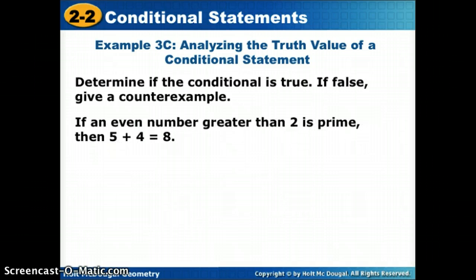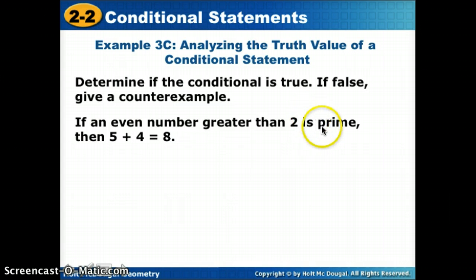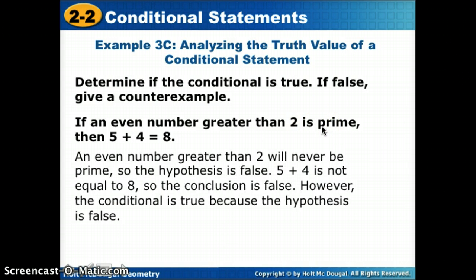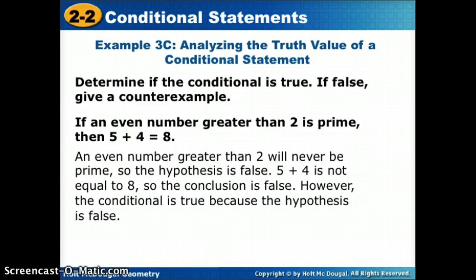'If an even number greater than 2 is prime, then 5 + 4 = 8.' Looking at the hypothesis — an even number greater than 2 being prime — that hypothesis is false. Any even number greater than 2, like 4, 6, or 8, can't be prime because 2 is a factor of it. Since the hypothesis is false, it doesn't matter that 5 + 4 ≠ 8. The conditional is true simply because the hypothesis is false; we don't even need to look at the conclusion.